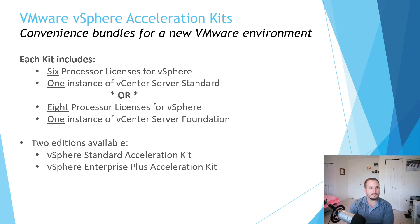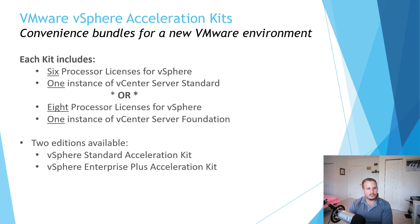The acceleration kit is actually very popular because it includes six processor licenses for vSphere Standard, as well as one instance of vCenter Server Standard. There's also an option for eight processor licenses for vSphere, but you get vCenter Server Foundation instead. My rule of thumb is I prefer the first option because you get vCenter Server Standard, which can support unlimited hosts. As you continue to grow and add additional processor licenses, you can manage those from vCenter Server, whereas Foundation limits you to a maximum of four hosts, which will bottleneck you eventually.